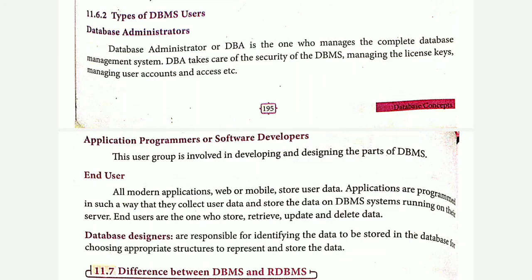The next person is the end user, who can only view the data and see results — not the underlying database or all the data stored inside it. Next is the database designer, who also has restricted rights to access the data. He can create data and access data but cannot change it. Every change must be done by other persons in the DBMS user hierarchy.